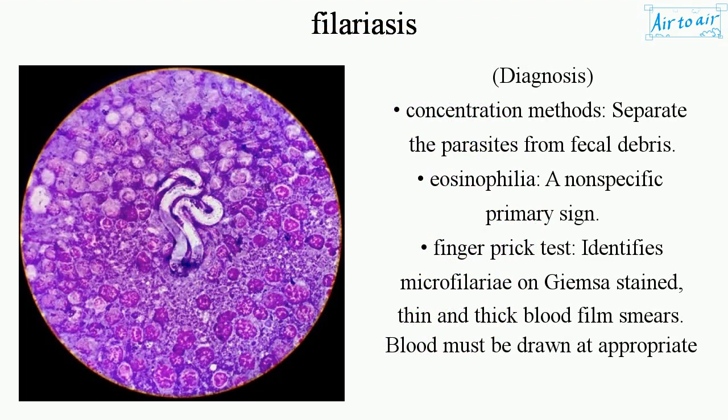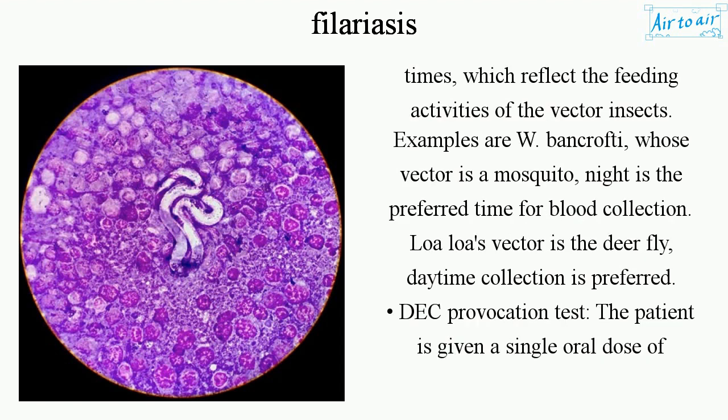Diagnosis. Concentration methods separate the parasites from fecal debris. Eosinophilia is a nonspecific primary sign. Finger prick test identifies microfilariae on Giemsa-stained thin and thick blood film smears. Blood must be drawn at appropriate times, which reflect the feeding activities of the vector insects.